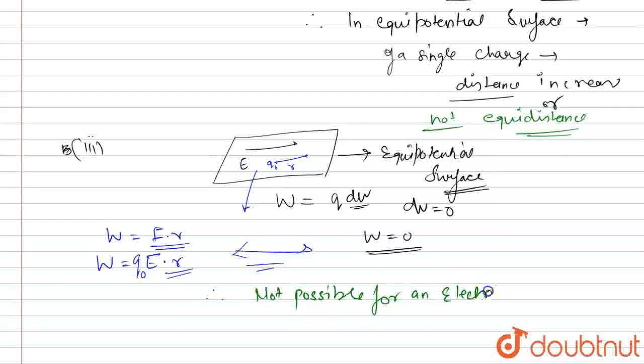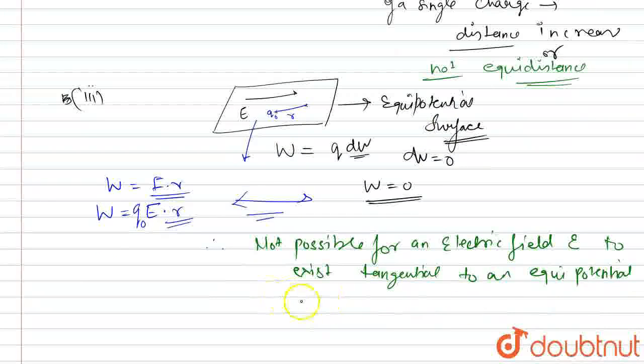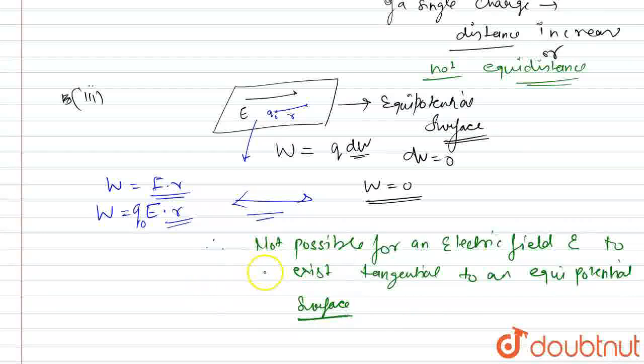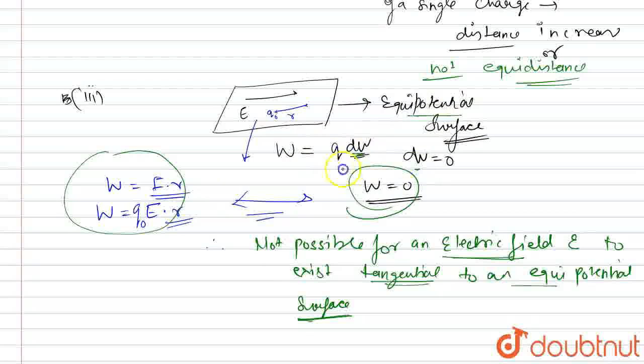Now these two terms is contradict which shows that therefore we can write that it's not possible for an electric field E to exist tangential to an equipotential surface. So it's not possible for an electric field to be tangential to the equipotential surface. Why? Because these two statement is contradict. Because according to this work done is zero but if we move a charge from q naught to point a to point b we get the work done. So by this we can see that it's not possible for an electric field to exist tangential to an equipotential surface. Thank you.